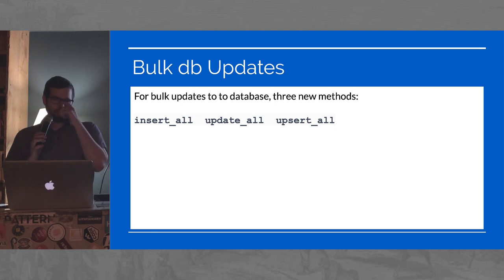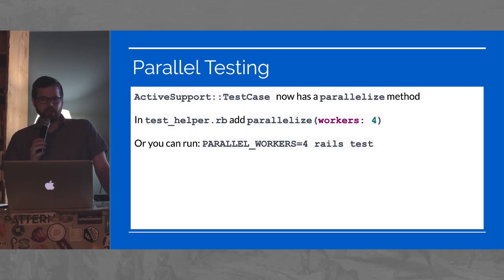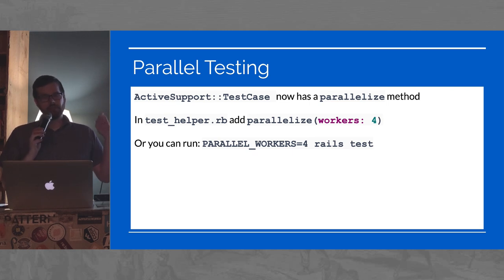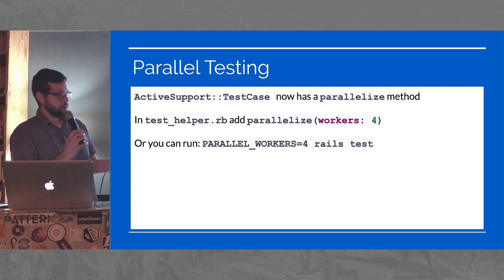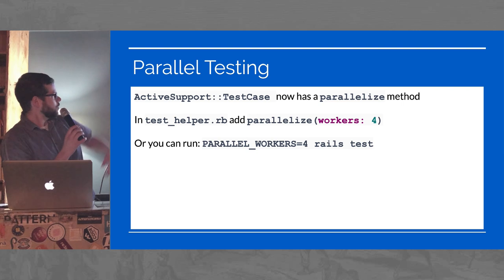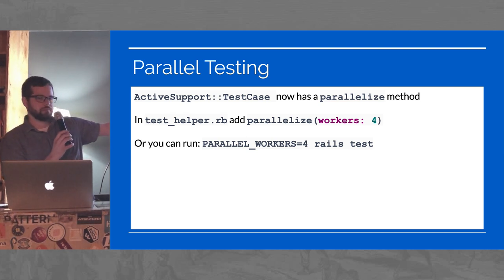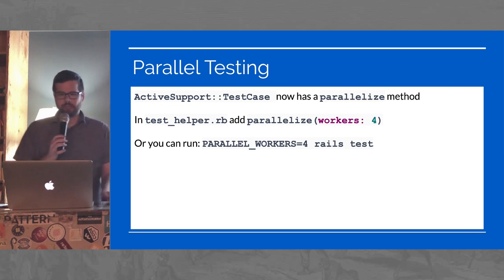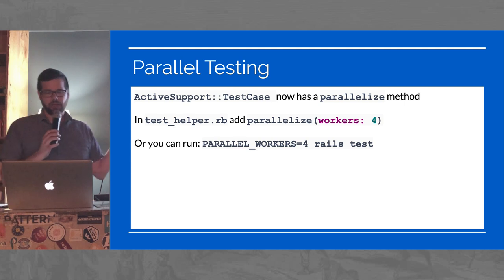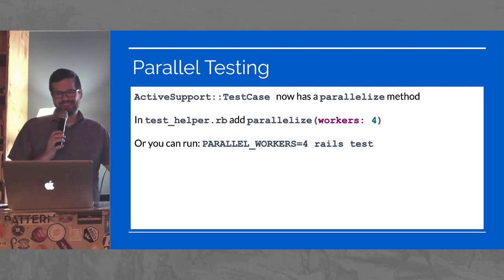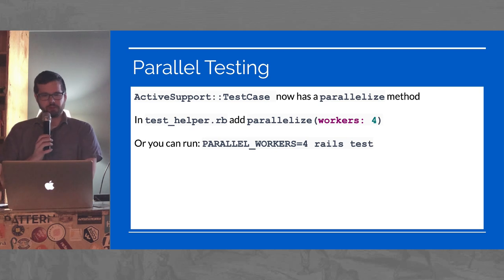Next is parallel testing. You can now parallelize your testing locally and natively. Previously there were lots of hacks to use multiple cores. Now you can either set parallelize with the number of workers, or run parallel workers equals four as an environment variable, and it just works. I have not tested this myself, but supposedly it works and runs on multiple cores.